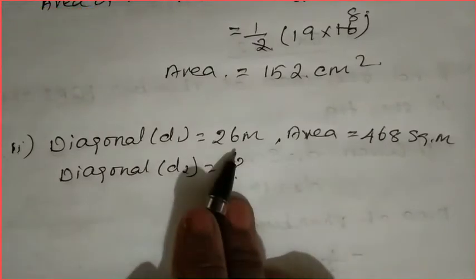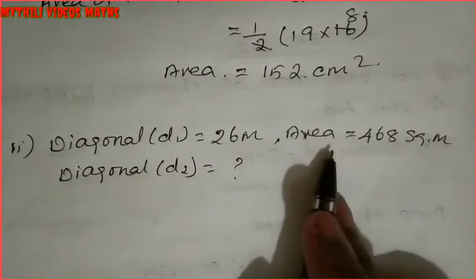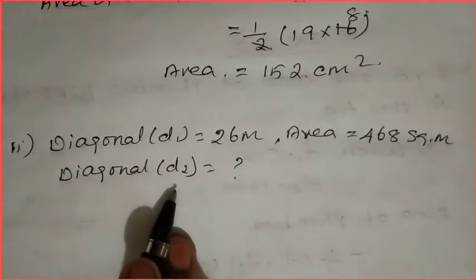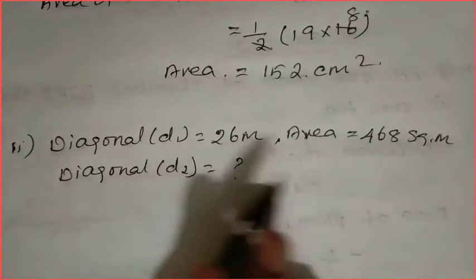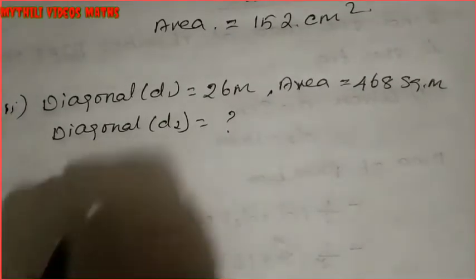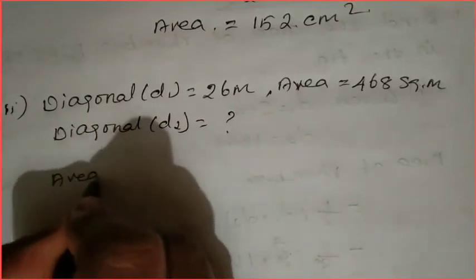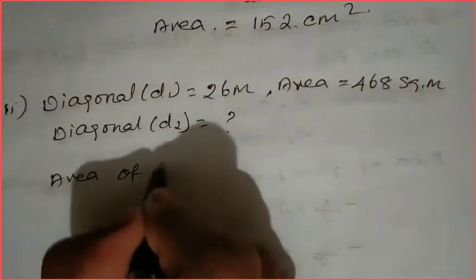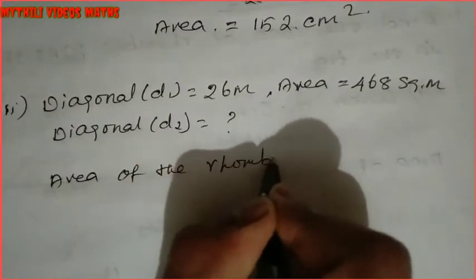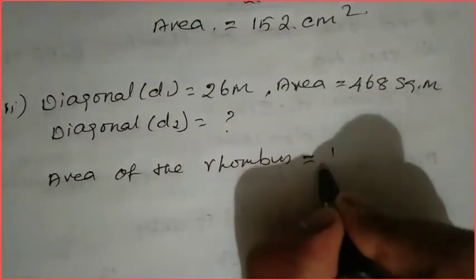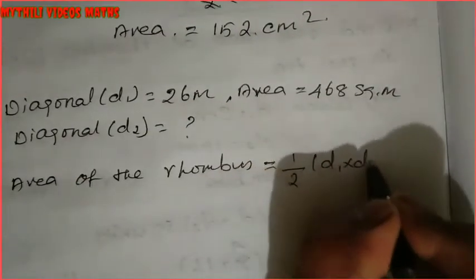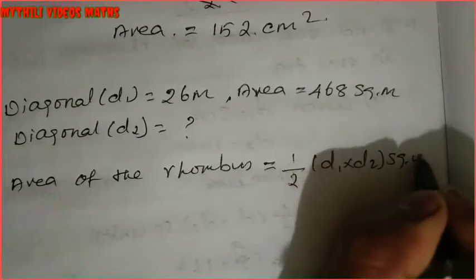Now the second subdivision: diagonal d1 = 26 meters, area = 468 square meters, and we have to find diagonal d2. d1 is given and area is given. Since diagonals are involved, we use the formula: Area of the rhombus = 1/2 × d1 × d2, in square units.